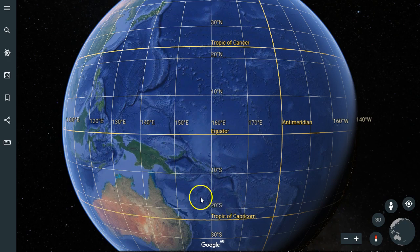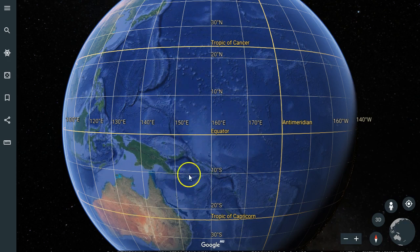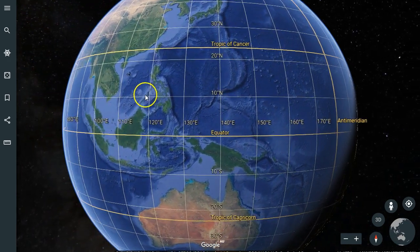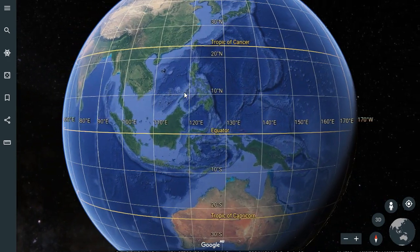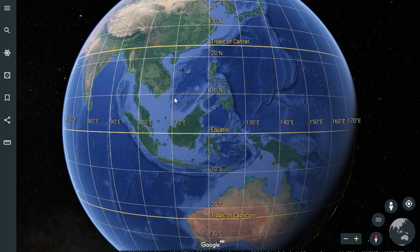So countries that lie in the tropics lie within the Tropic of Cancer and the Tropic of Capricorn, and these countries are the warmer, hotter climates where you don't really get your four seasons.